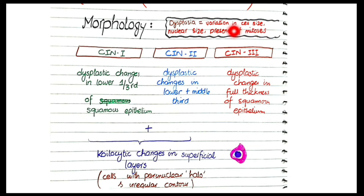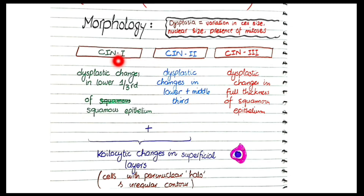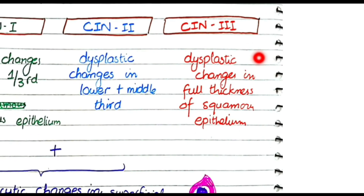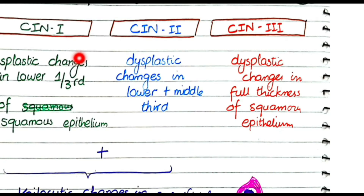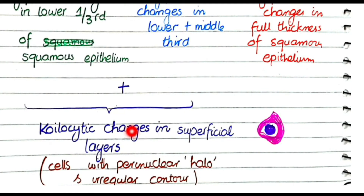Koilocytic change is different from dysplasia. In dysplastic cells, perinuclear vacuolization is usually not visible, whereas in koilocytic change, the perinuclear halo is visible. Koilocytic change is present in the superficial layers in CIN 1 and CIN 2. In CIN 3, this koilocytic change is not visible because all layers of the squamous epithelium have been transformed into dysplastic cells. In CIN 1 and CIN 2, only the lower layers are affected by dysplasia, so the superficial layers remain intact and can manifest koilocytic change.